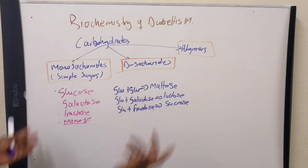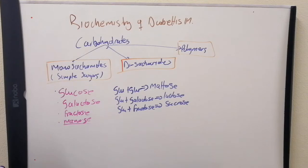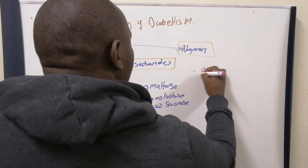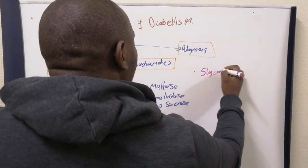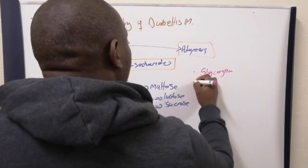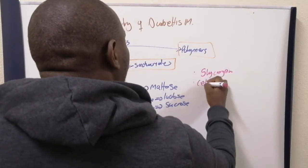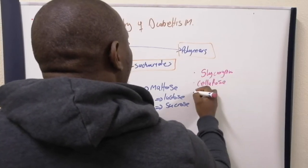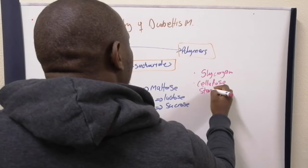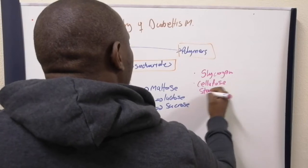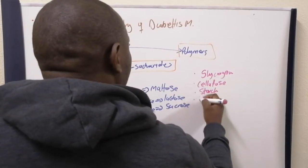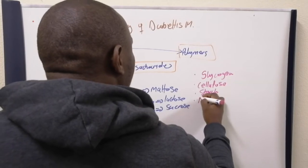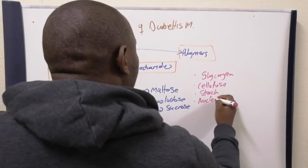If you continue linking these together, you get to the point where you form glycogen. You form cellulose if you're a plant, you form starch, and you form the sugars found in your nucleotides.